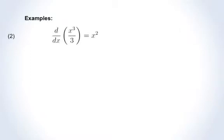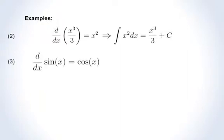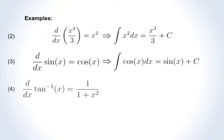Now let's consider some examples. We know from differential calculus that the derivative of x cubed over 3 is x squared, which implies that the integral of x squared is x cubed over 3 plus c. Similarly, the derivative of sine of x is cosine of x, so the integral of cosine of x is sine of x plus c. Recalling that the derivative of the arc tangent function, denoted here by tan inverse, is 1 over 1 plus x squared, we find that the integral of 1 over 1 plus x squared is tan inverse of x plus c.